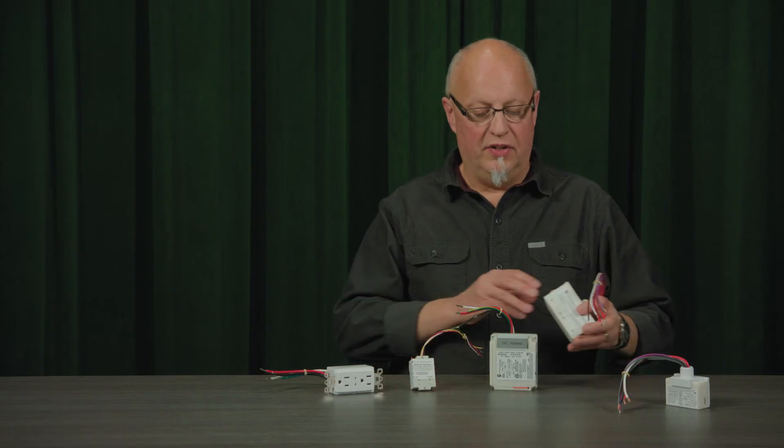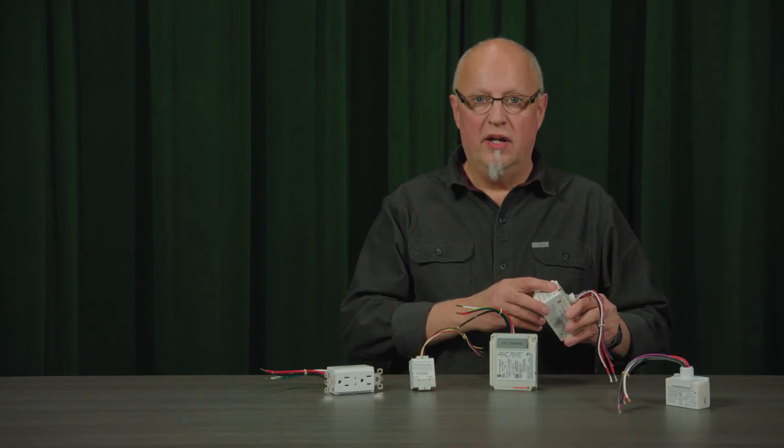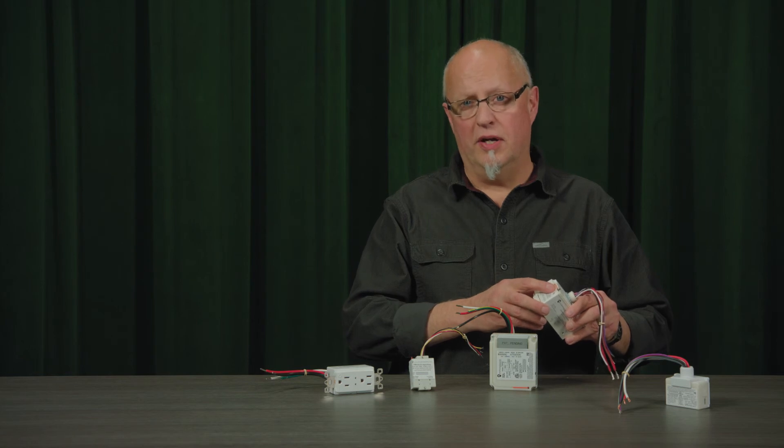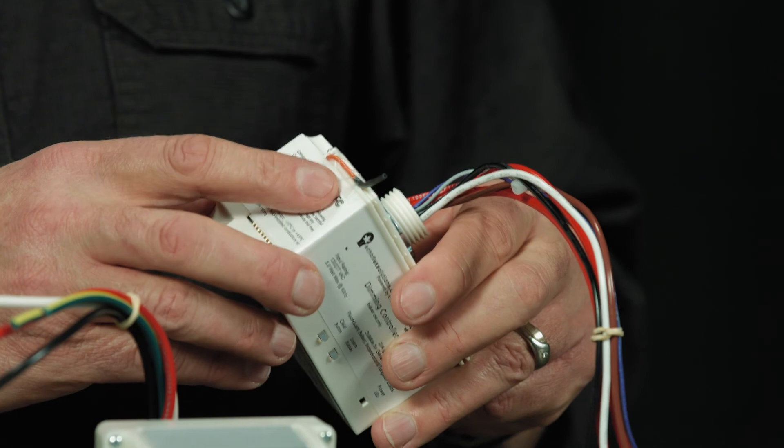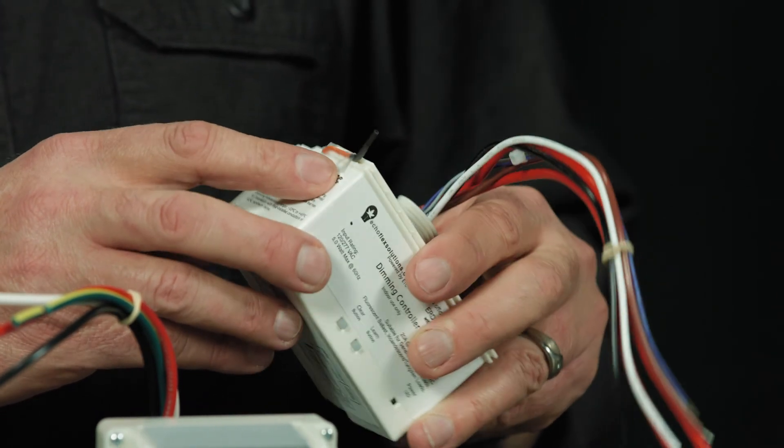The last thing I want to draw your attention to is the orange wire that is visible on some of the products. This is the antenna wire and it should not be tampered with. You don't want to be cutting or putting a wire nut on this wire.